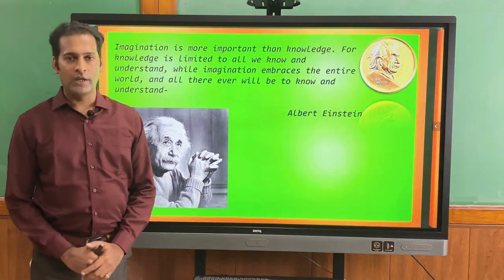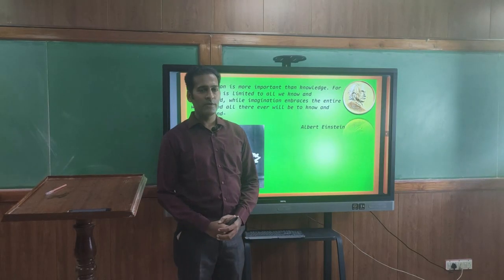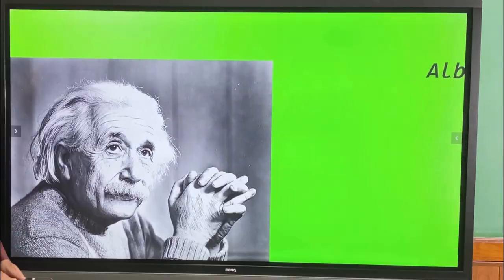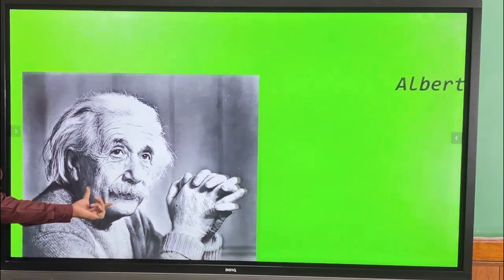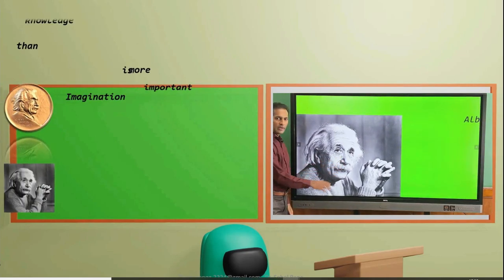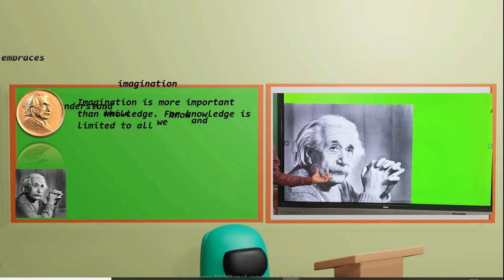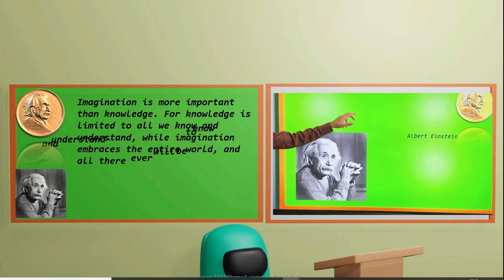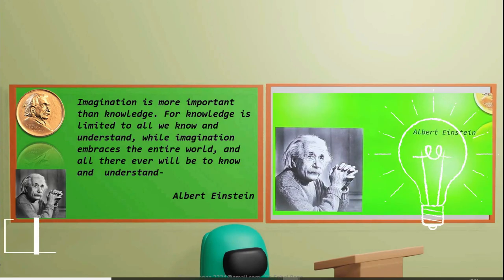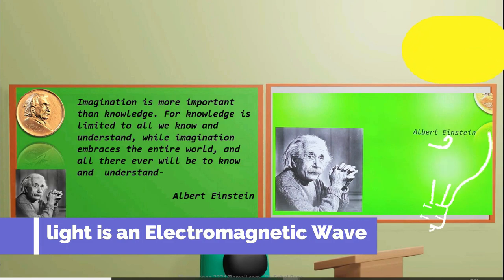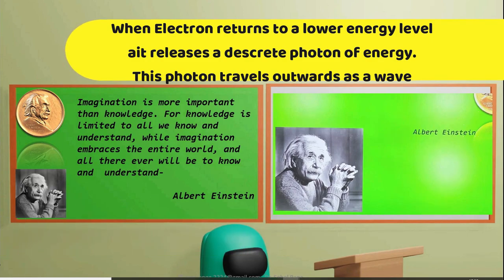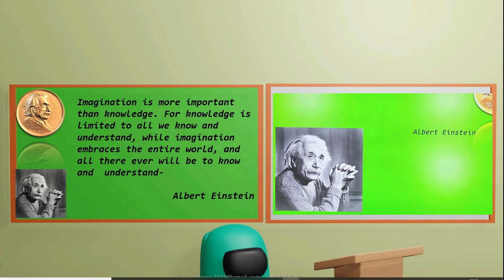We begin this subject with a quote from Einstein, who stressed that imagination is the most important thing. Wave-particle duality is the concept in quantum mechanics that every particle or quantum entity may be described as either a particle or a wave. Albert Einstein proposed the wave-particle theory of electromagnetic radiation, which states that electromagnetic energy is released in discrete packets called photons that act like waves. After Einstein presented his theory, scientists found evidence to support it.